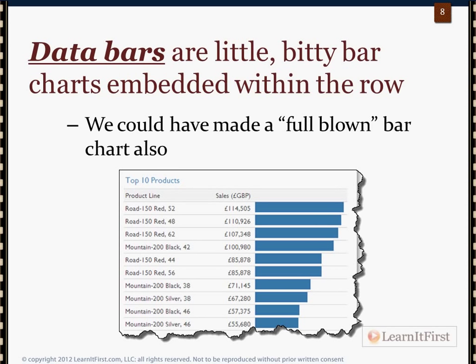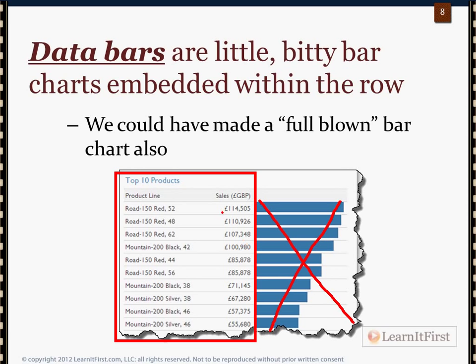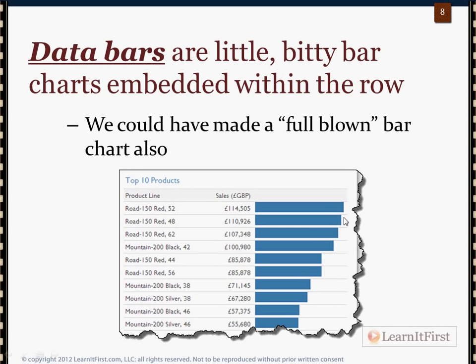Data bars are similar to sparklines in that they are a single-row value chart — just little bitty column charts or bar charts built within that particular row. We can do a direct visual comparison. Imagine you didn't have this visual and were just dealing with a table — yeah, you can see we sold 114 and this one is about half of that — but that visual element really sets it off. You can immediately see there's a big drop-off between Mountain 200 and Road 150, right there. That's data bars.